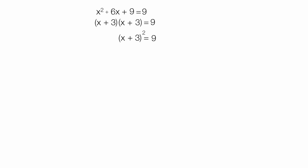Now I take the square root of both sides of the equation, the left and the right side. And this gives us x plus 3 is equal to plus or minus 3. Now I have two equations. I have x plus 3 is equal to 3, and x plus 3 is equal to negative 3.